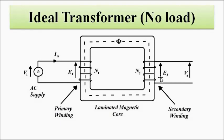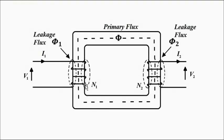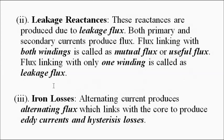In an ideal transformer, it is assumed that all the flux generated in the primary winding links with the secondary winding and vice versa — there is only mutual flux. But in reality, that is not the case. The flux linking only with the winding itself is the leakage flux. The flux that links with both windings through the laminated core is the mutual flux. In practical transformers, there will also be eddy current and hysteresis losses produced due to the alternating flux generated by the alternating current.